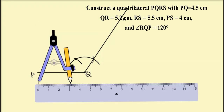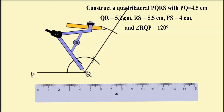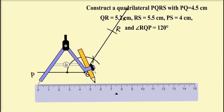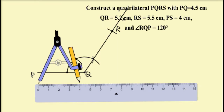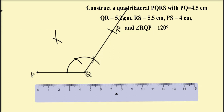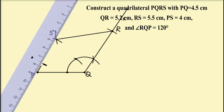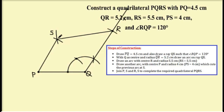Mark QR equal to 5.2 cm and draw an arc on ray QX with Q as center. Mark the intersection point as R. Then to locate the fourth vertex, take RS equal to 5.5 cm and draw an arc with R as center. Then take PS equal to 4 cm and draw another arc such that it intersects the previous arc at point S. Now join points R and S, and also join points P and S. So PQRS is the required quadrilateral.